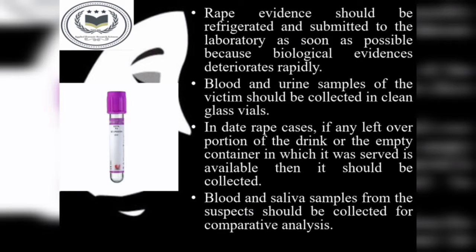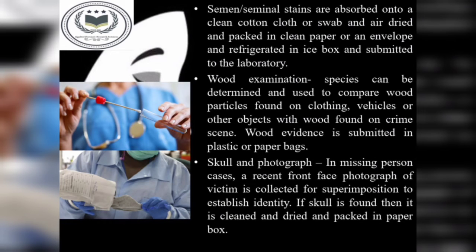Blood, saliva, and urine samples of the victim and all suspects should be collected for comparative analysis. In date rape cases, any leftover portion of the drink or the empty container in which it was served should be collected. Fluid stains are swabbed onto clean cotton cloth or swab, air dried, and packed in clean paper or an envelope and refrigerated. Wood particles found on clothing and other evidence at the crime scene are submitted in plastic or paper bags.